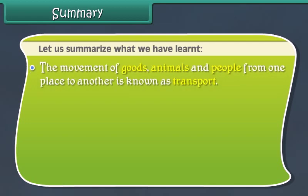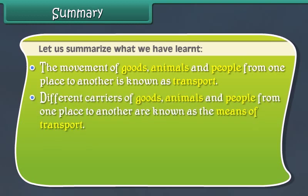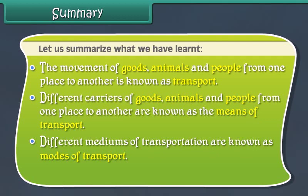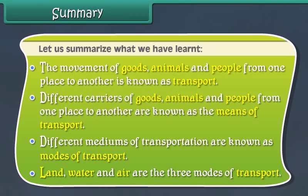Let us summarize what we have learnt. The movement of goods, animals and people from one place to another is known as transport. Land, water and air are the three modes of transport.